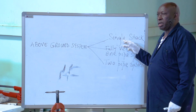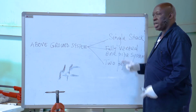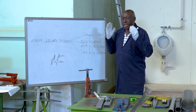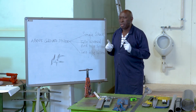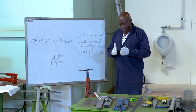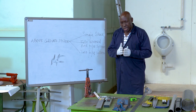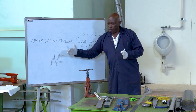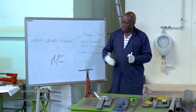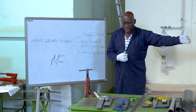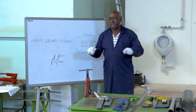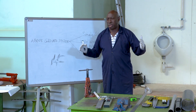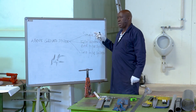Finally, we have the single stack system, which is our focus for today. This system has no ventilation and uses a single pipe into which all soil appliances and waste appliances drain together. The key condition for the single stack system is that there are maximum distance limits for how far an appliance can be from the stack — for example, WC: 1.5 meters, wash basin: 1.6 meters, kitchen sink: 2.3 meters. These are tested dimensions that must not be exceeded, or there will be problems in the system.